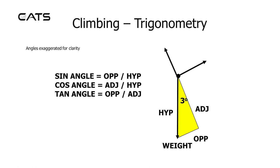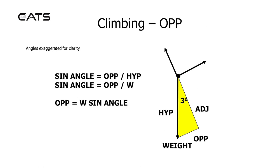Labelling up the yellow triangle, the side opposite 3 degrees is called opposite, the longest side is the hypotenuse, which corresponds to the weight, and the remaining side is adjacent. Since sine equals opposite over hypotenuse, and hypotenuse is weight, we get sine of the angle equals opposite divided by weight. Rearranging, opposite equals weight sine angle — and opposite is the force acting rearwards along the flight path.